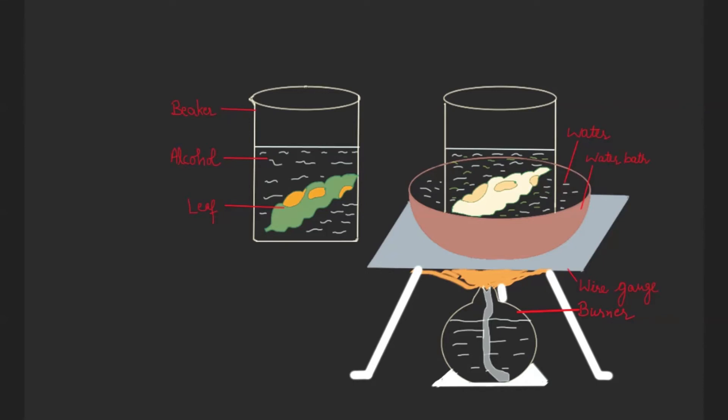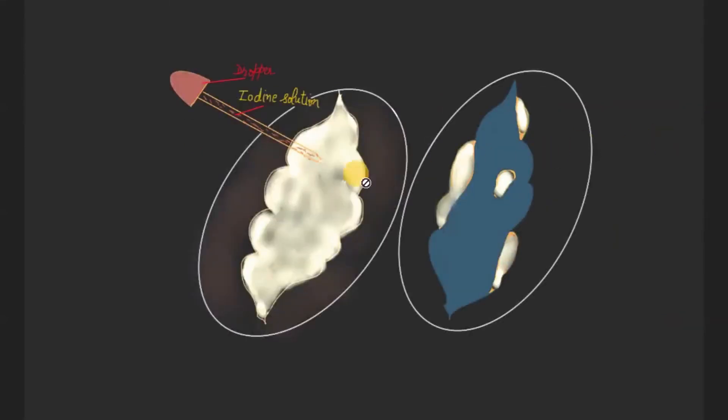then we will take this leaf and we will place it in a petri plate. Then we will add iodine solution into it, rinse it with water, and observe.